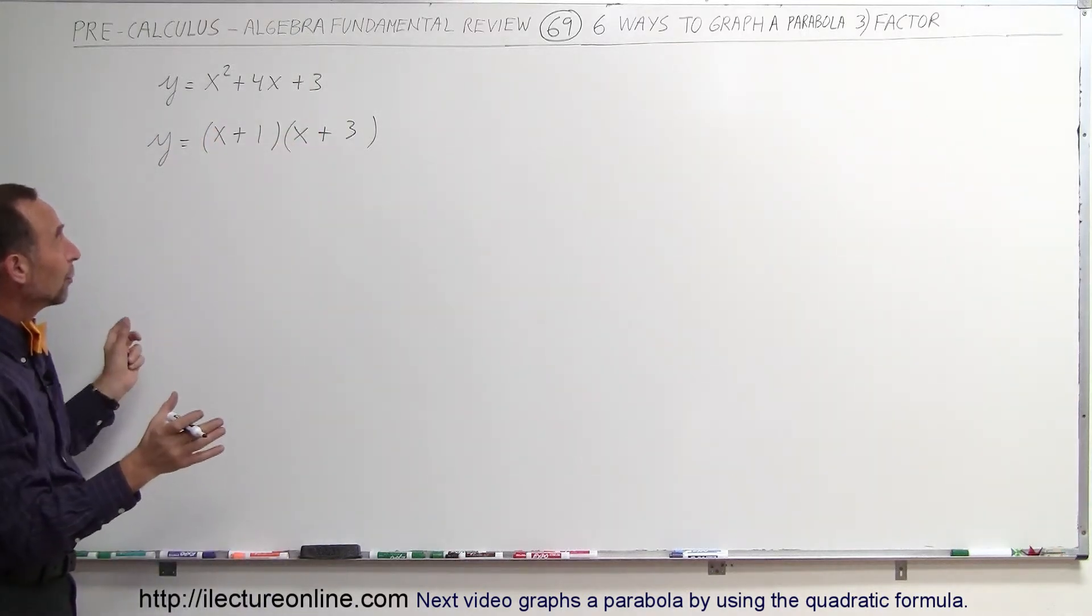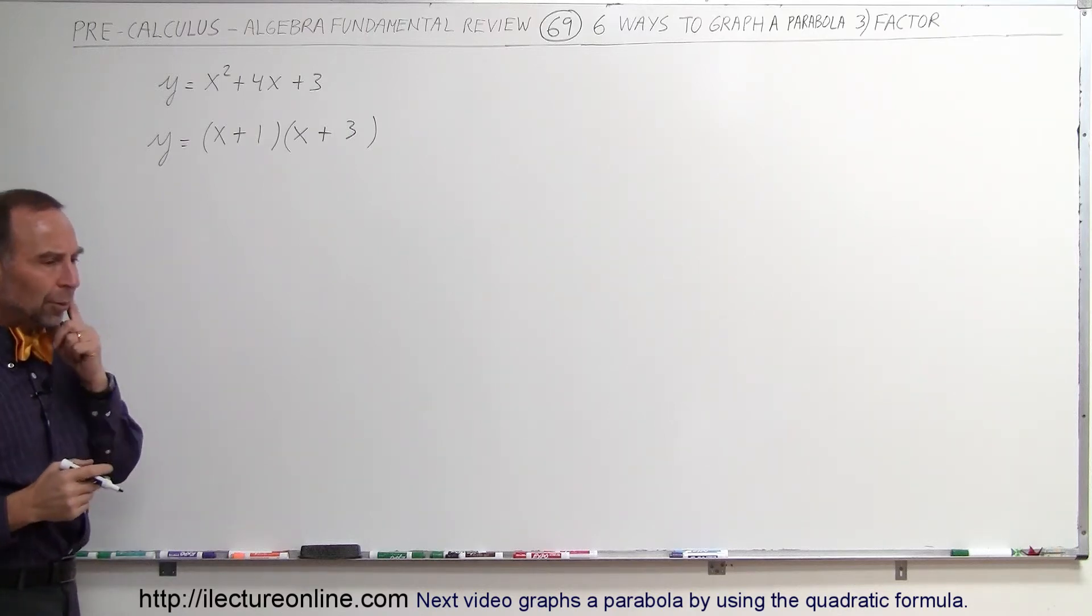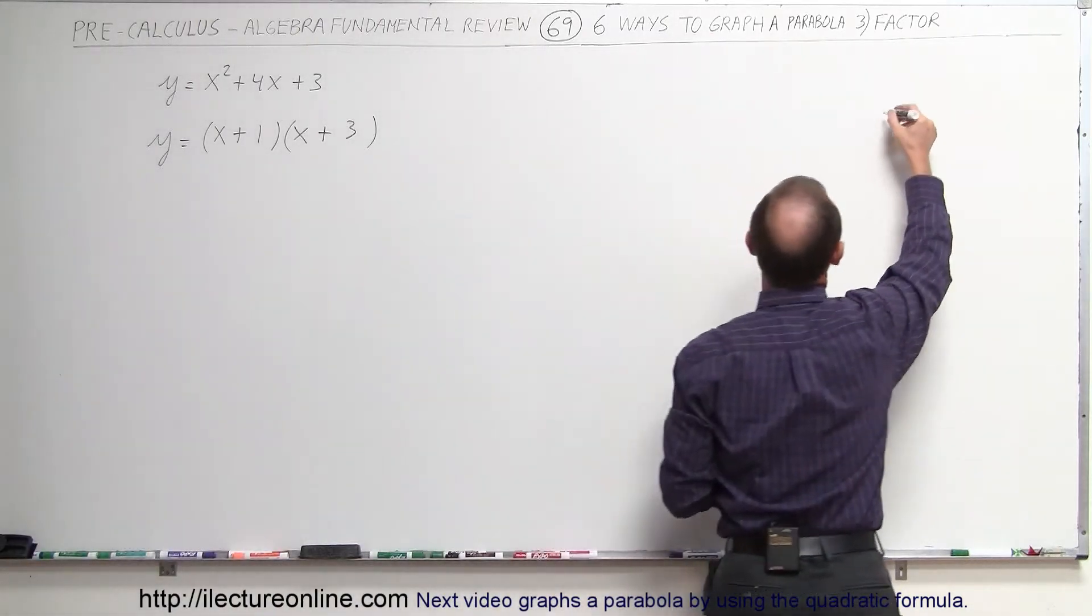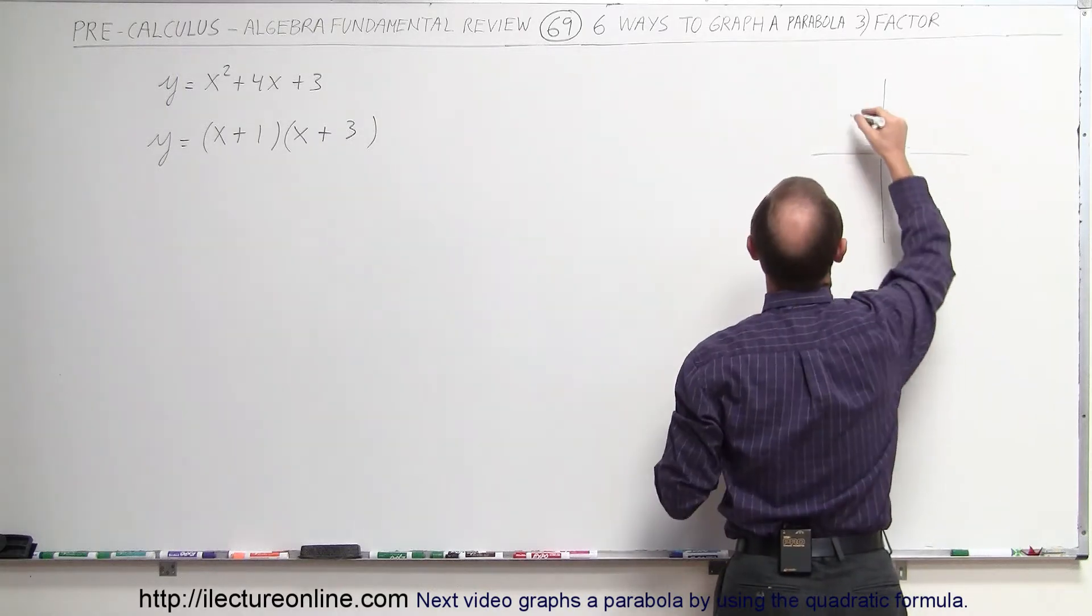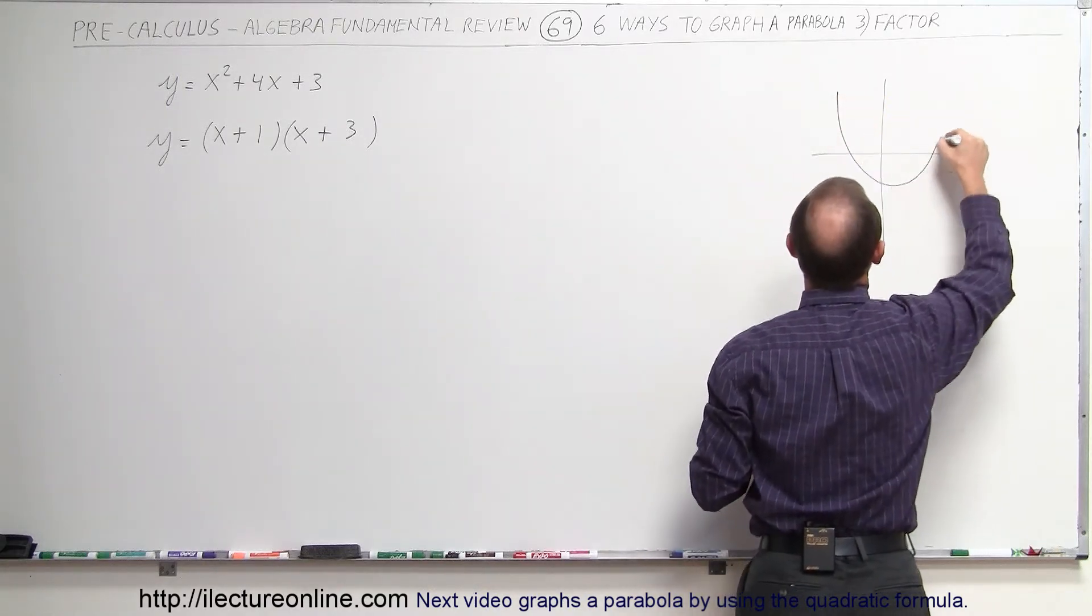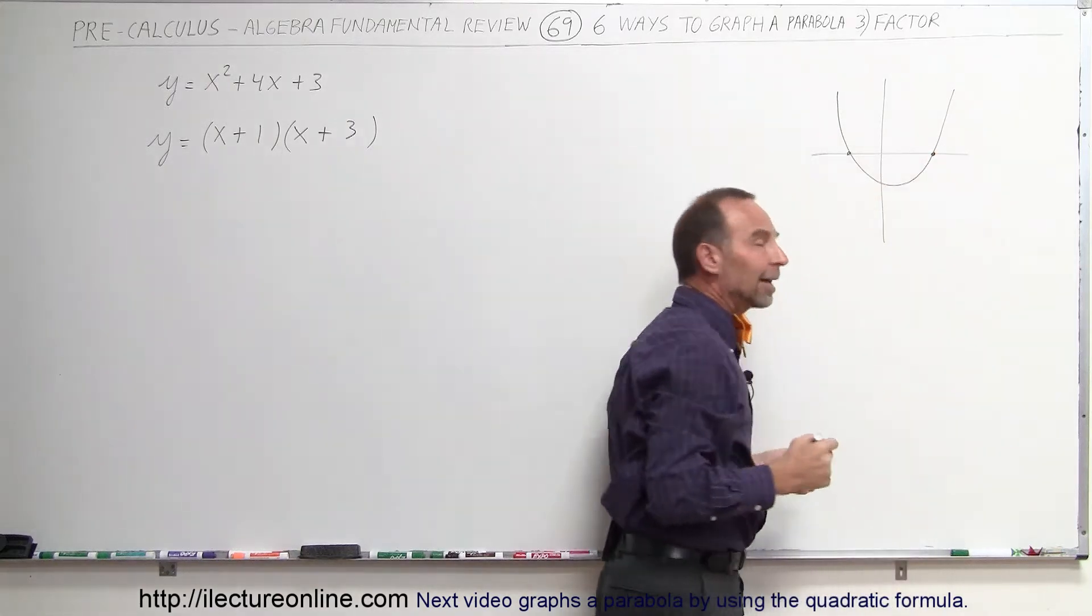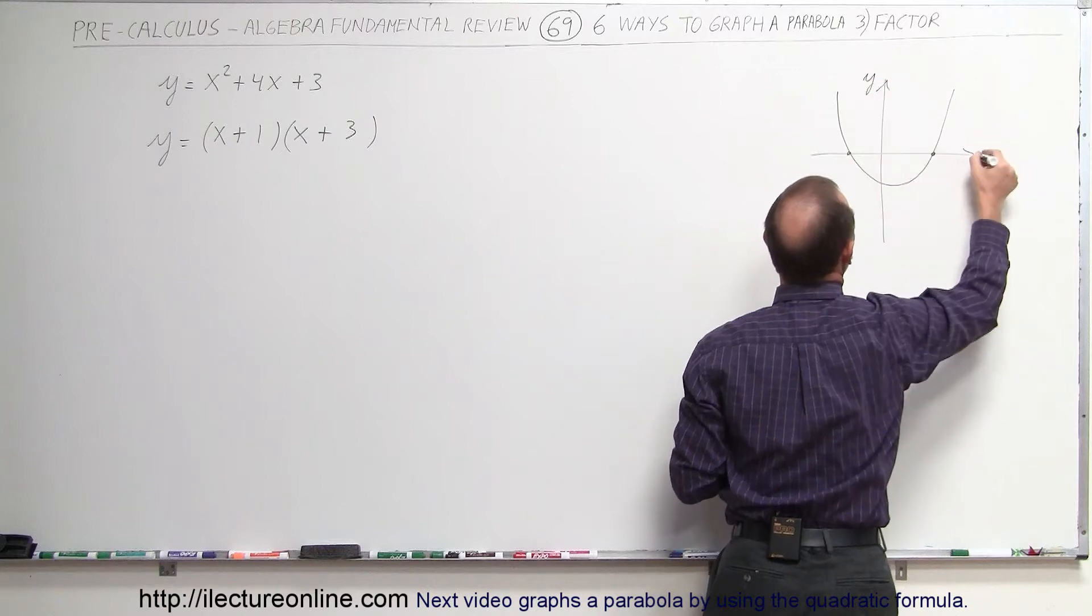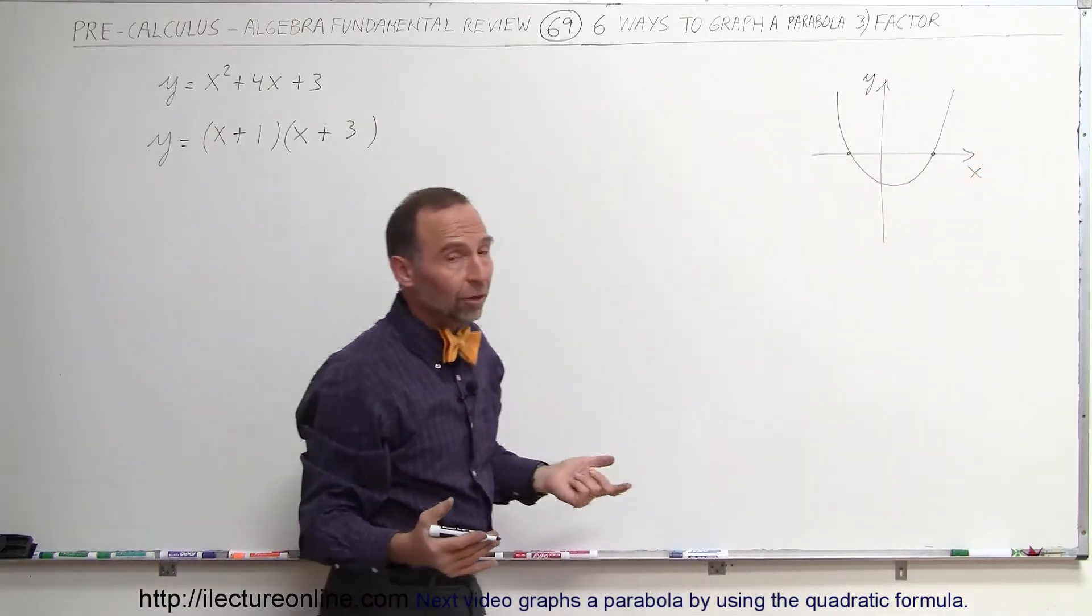Now we know that we have y written as the product of two binomials. Now remember what we said about parabolas. If parabolas have real solutions, and let me put that over here. In this case, the parabola opens upward. And if there's a real solution, that means that there's two places where it's going to cross the x-axis. And of course, this is the y-axis, and this is the x-axis. And that means where it crosses the x-axis, y is equal to zero.